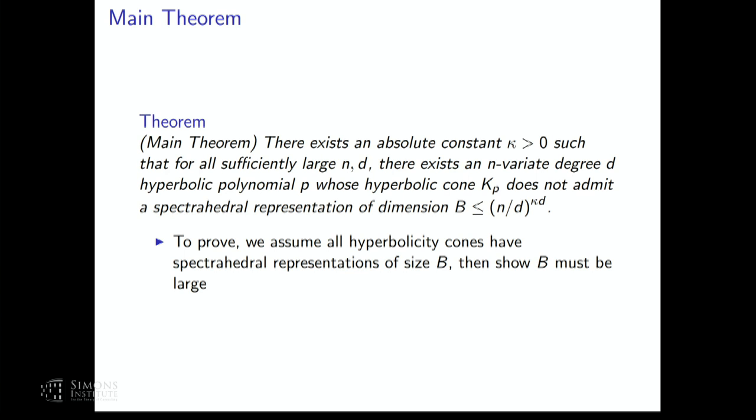This is our main theorem. We find a family of polynomials of increasing degree and number of variables such that if there are spectrahedral representations for these polynomials, they have to be exponentially large. There's an algebraic way to do this, pointed out by Cynthia Vincent. Our proof is analytic, so we get something more for free: not only do we find a family of polynomials with exponentially sized spectrahedral representations, but also any approximate spectrahedral representation also has to be exponentially large. The rest of the talk will step through how we got to this result.